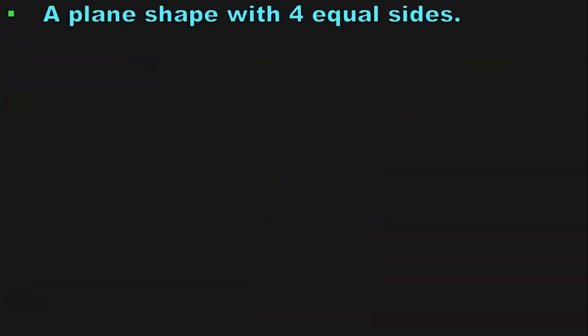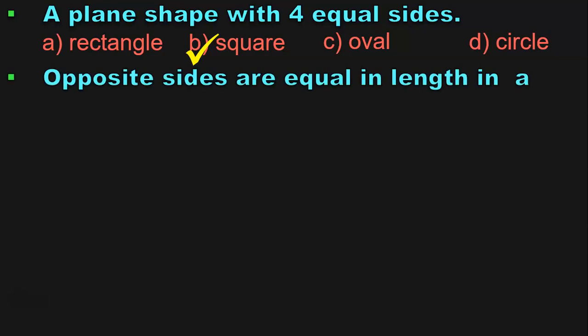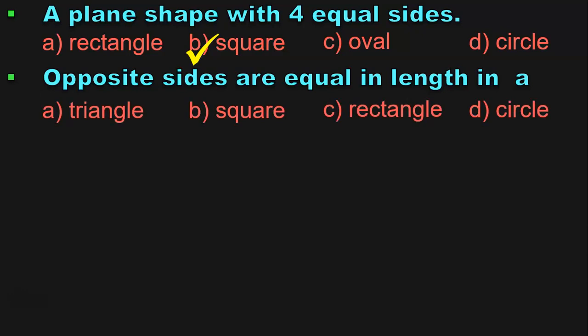A plane shape with four equal sides is a square. A square has four equal sides. Opposite sides are equal in length in a rectangle. The correct answer is a rectangle.